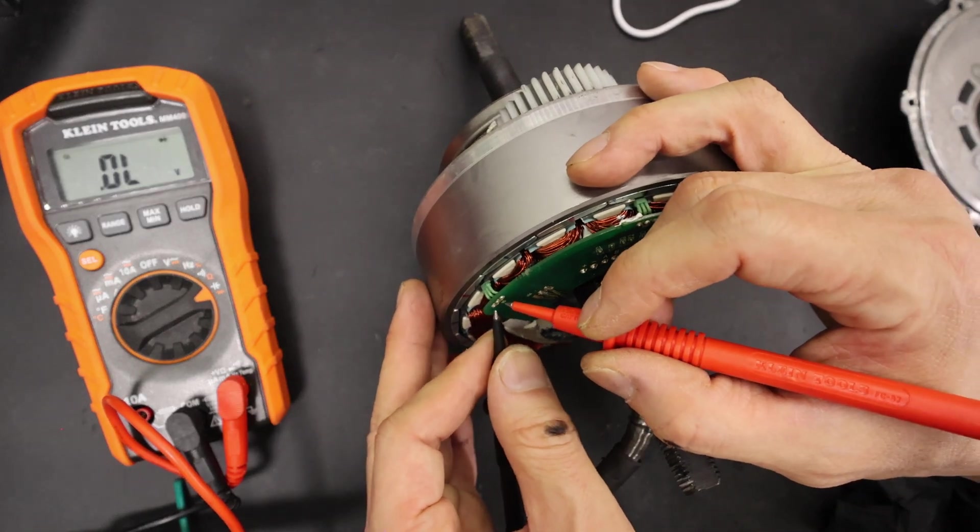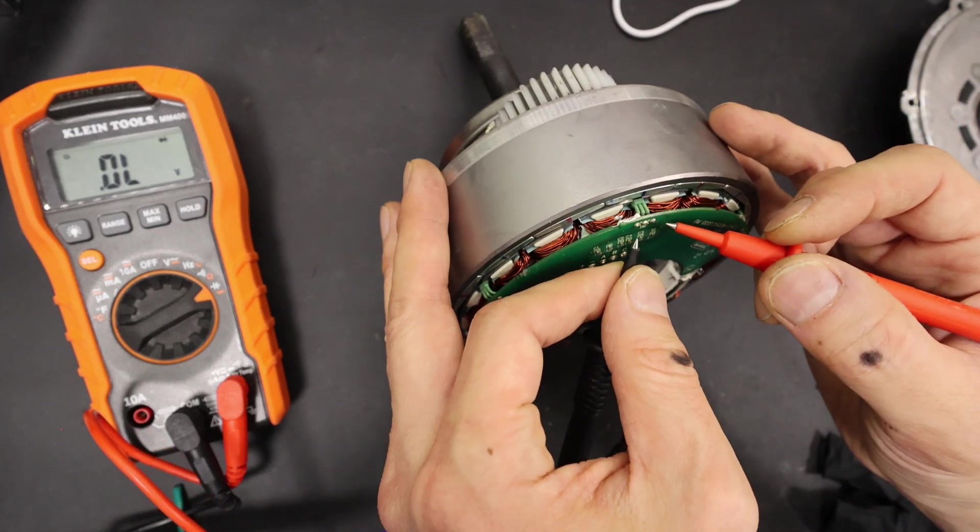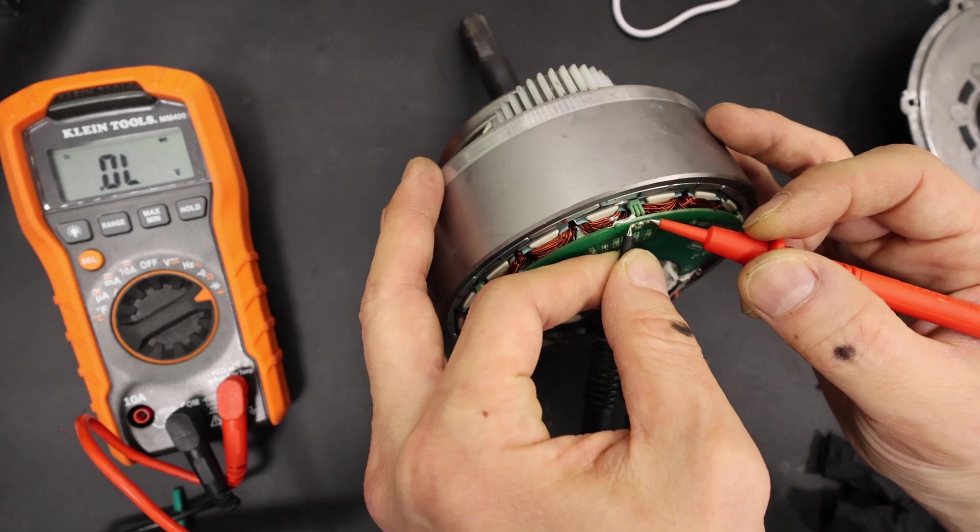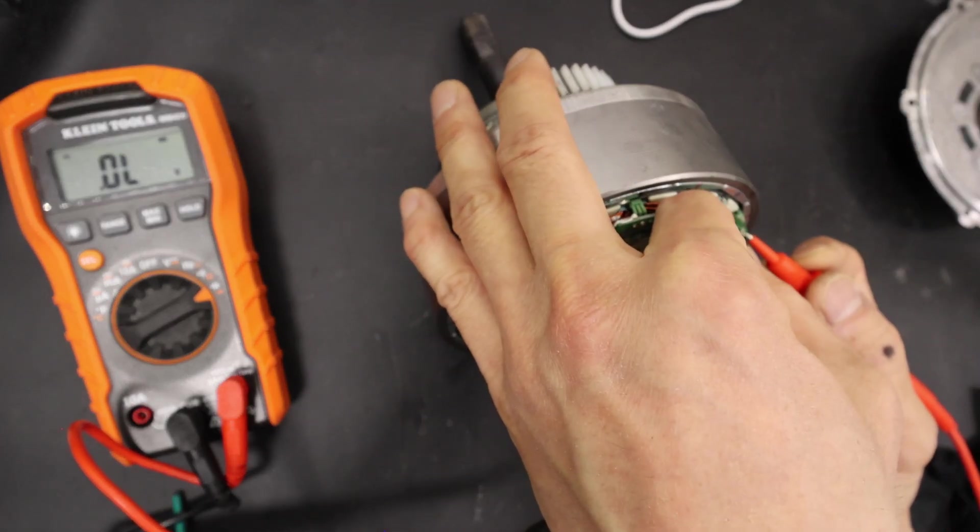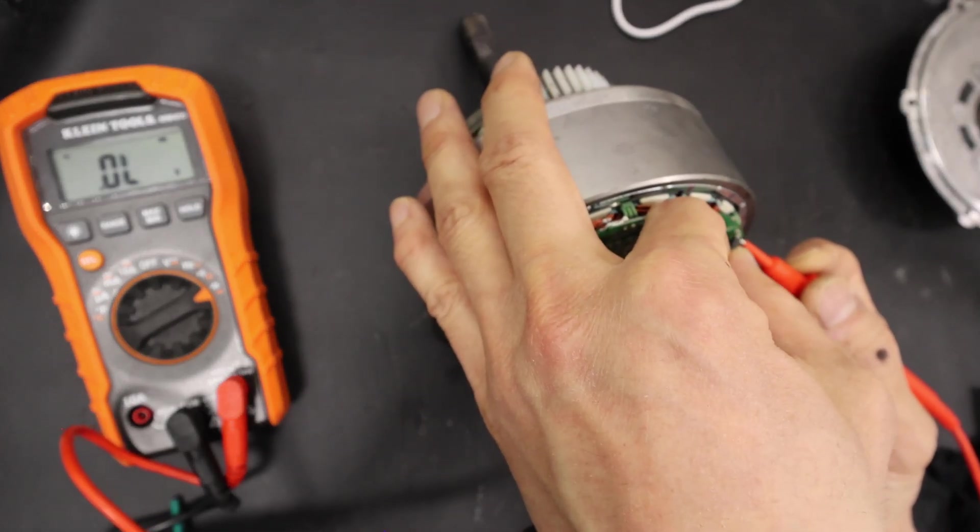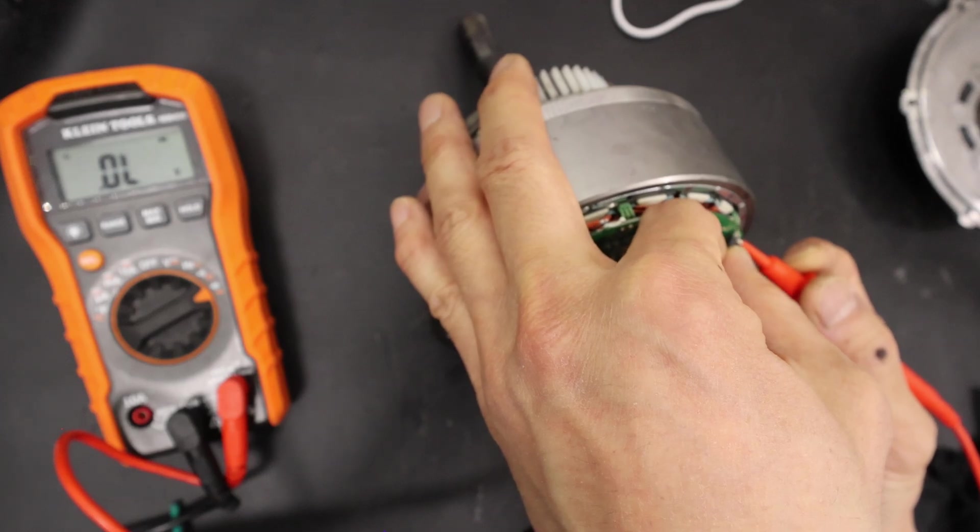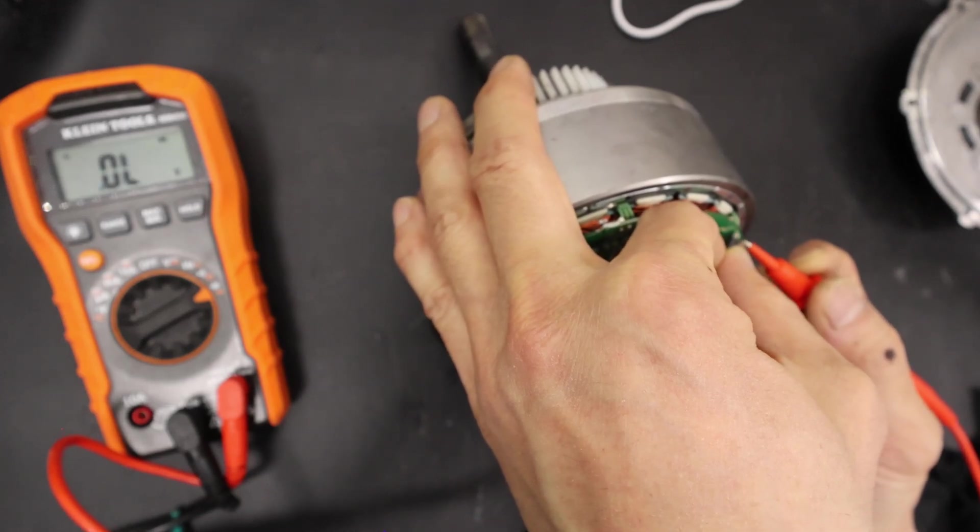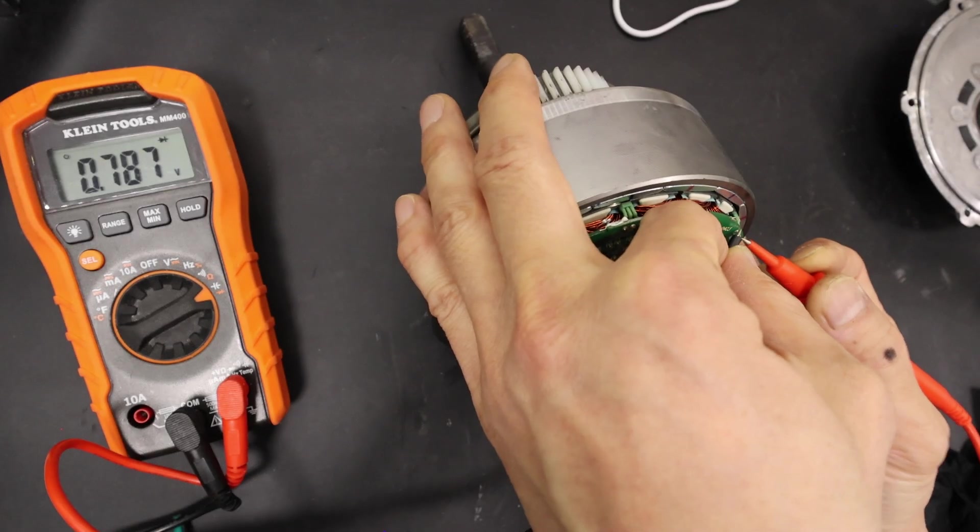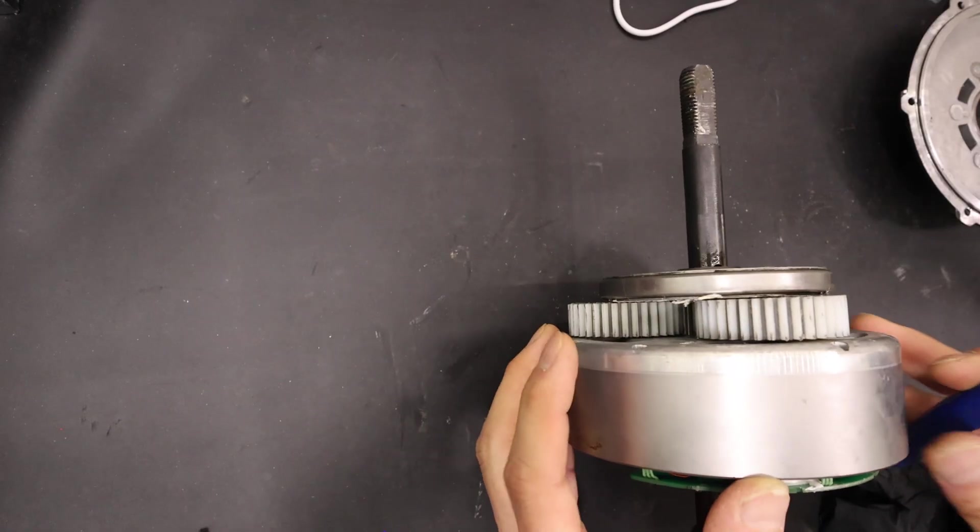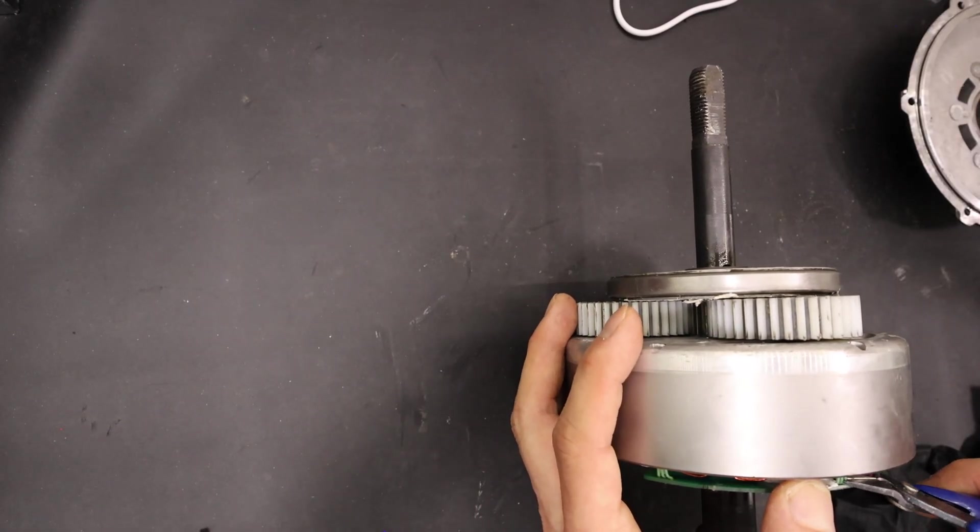So here I'm just doing a quick diode test to the hall sensors. And if you notice, I'm putting the ground on the positive leg and then the signal, I'm putting the positive, and that's giving it a voltage drop. And the middle one wasn't showing any voltage drop, so I knew that was the bad one.